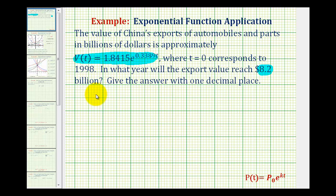So we want to solve the equation 8.2 equals 1.8415 times e raised to the power of 0.3389t. For the first step to solve this, we want to isolate the exponential part of the equation, which means we want to divide both sides by 1.8415.